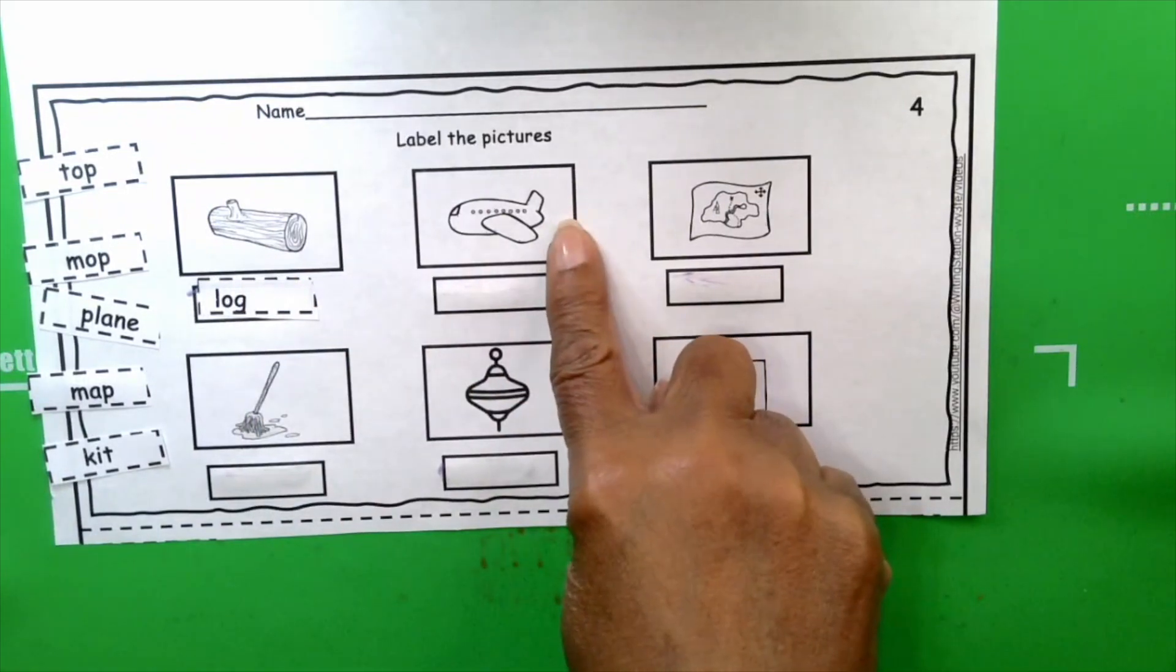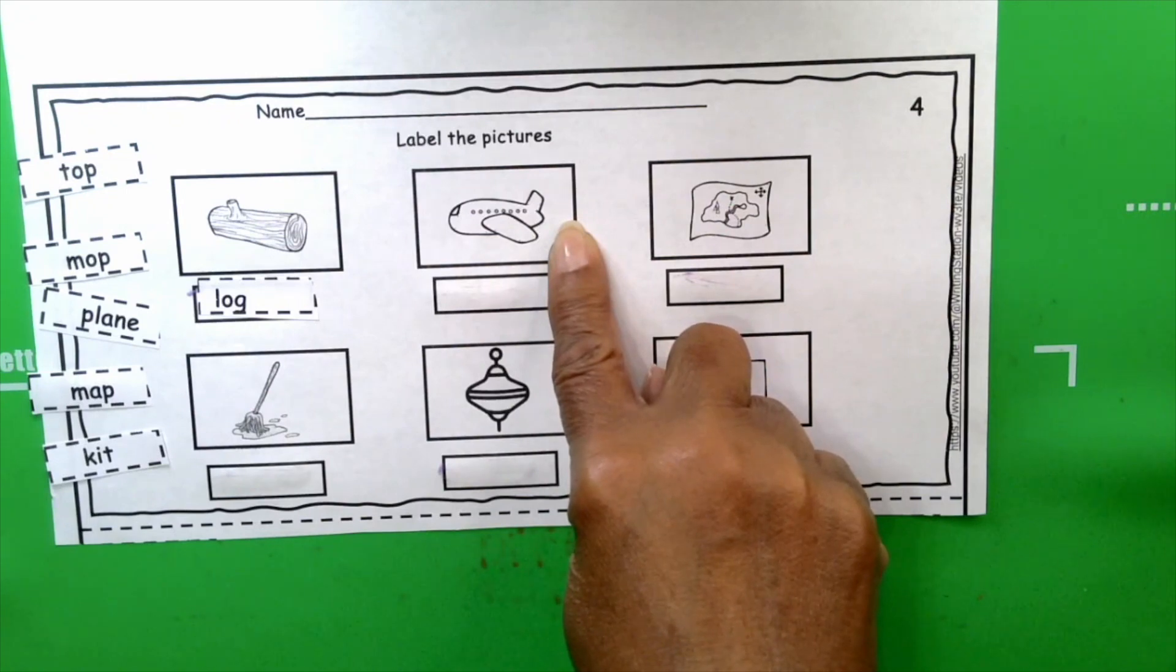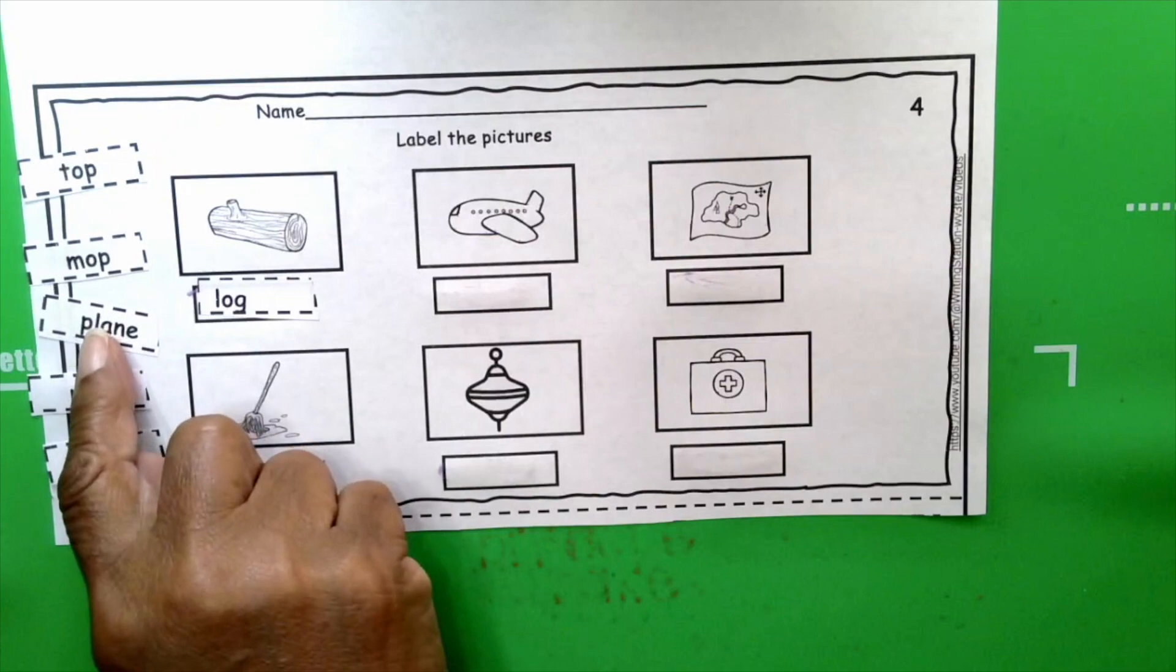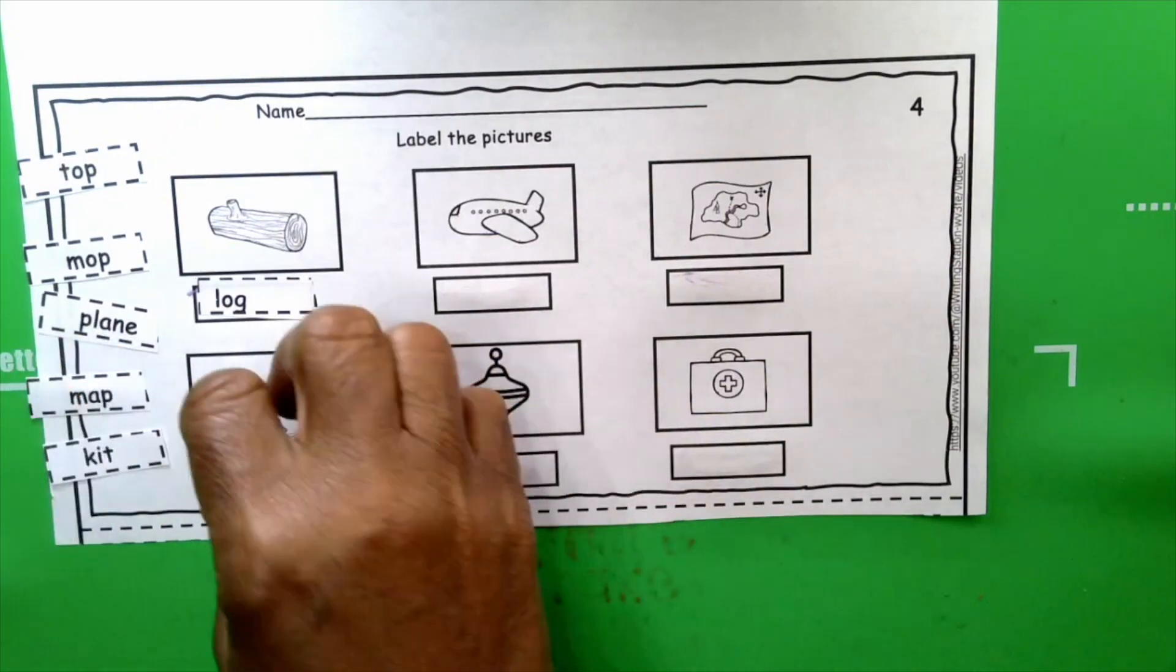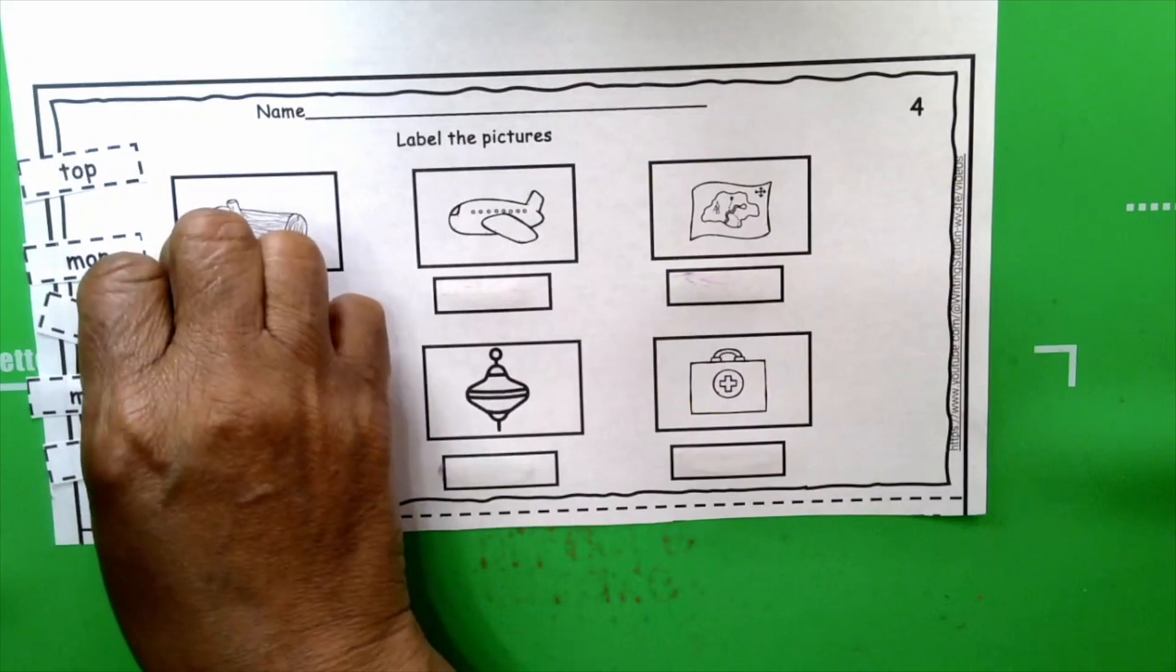Plane. What letter does plane begin with? P. And the consonant blend is P-L. Okay, so we only have one word that begins with P. So far, this is pretty easy.